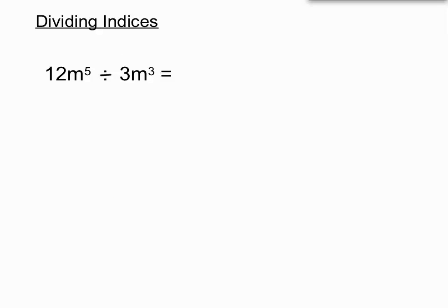When we have some numbers involved as well, we've got the same terms — m to the 5 divided by m to the 3 — but we've got some numbers out the front. The numbers out the front didn't make a lot of difference when we were multiplying indices, and they don't here either. 12 divided by 3 is just 4, and that's true here as well. The front numbers are just divided normally, so they shouldn't put us off.